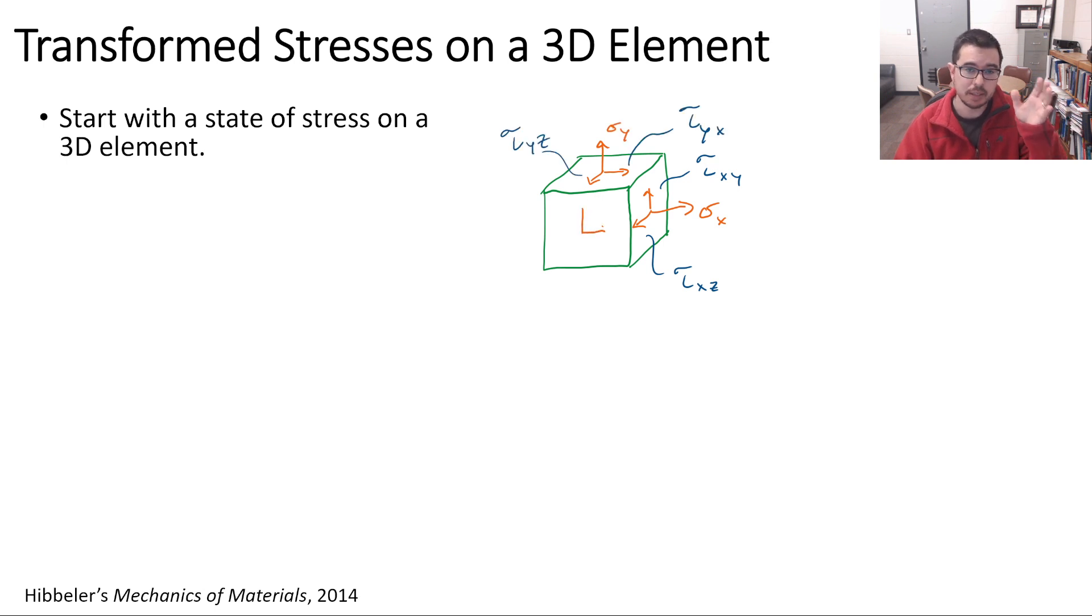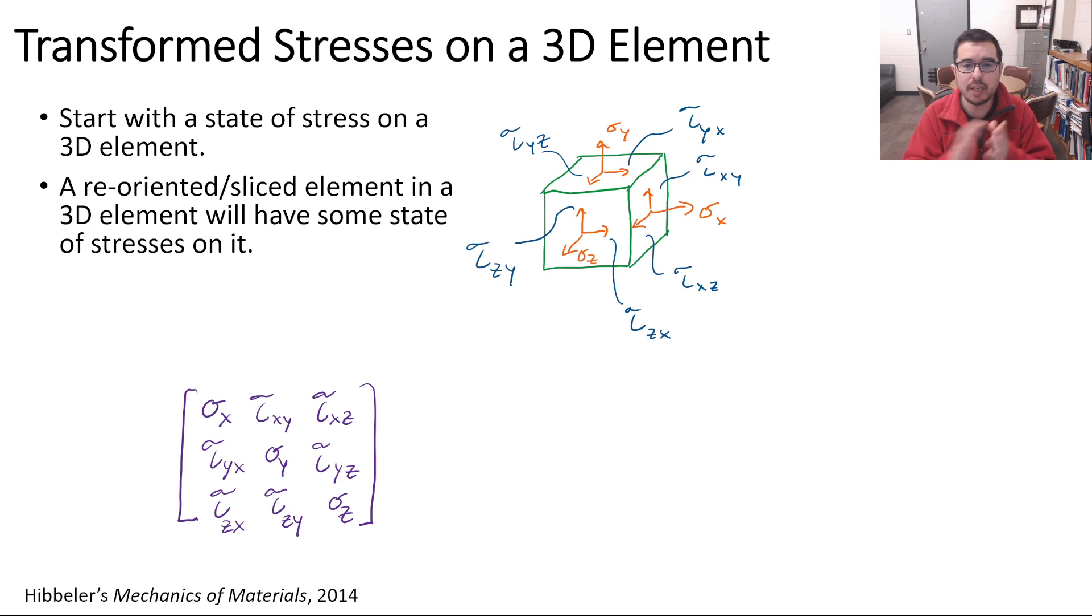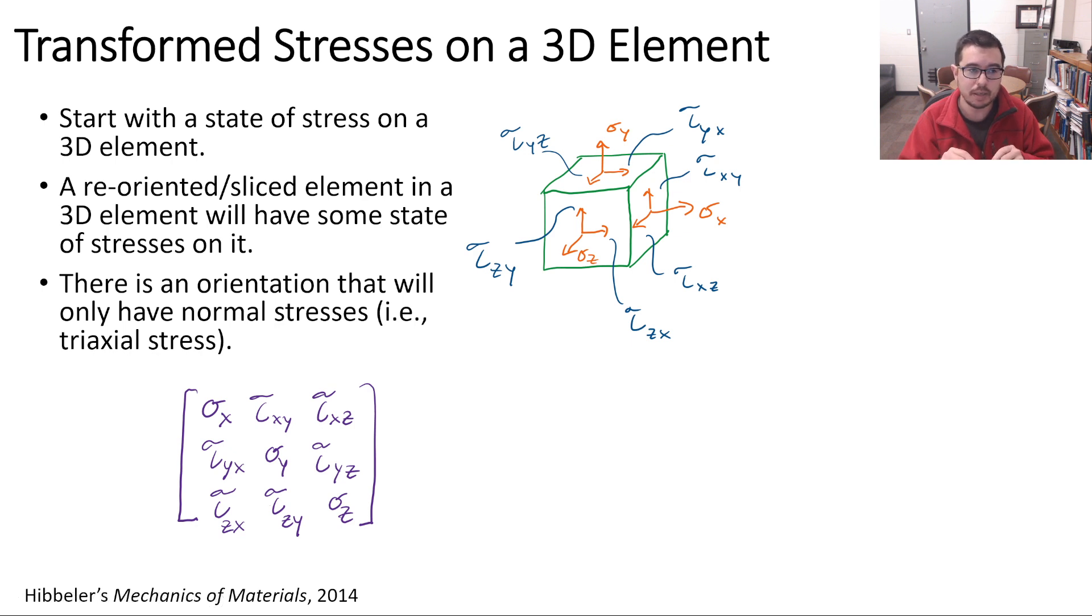With a general state of stress in 2D, we could rotate about one axis and be able to depict another state of stress. In 3D, we can do a similar thing. In fact, we can depict a state of stress at an arbitrary set of angles. So a reoriented or sliced element, just like we were slicing in 2D, we could take a slice in 3D. It turns out that there is an orientation that will only have normal stresses. This is called a condition of triaxial stress.